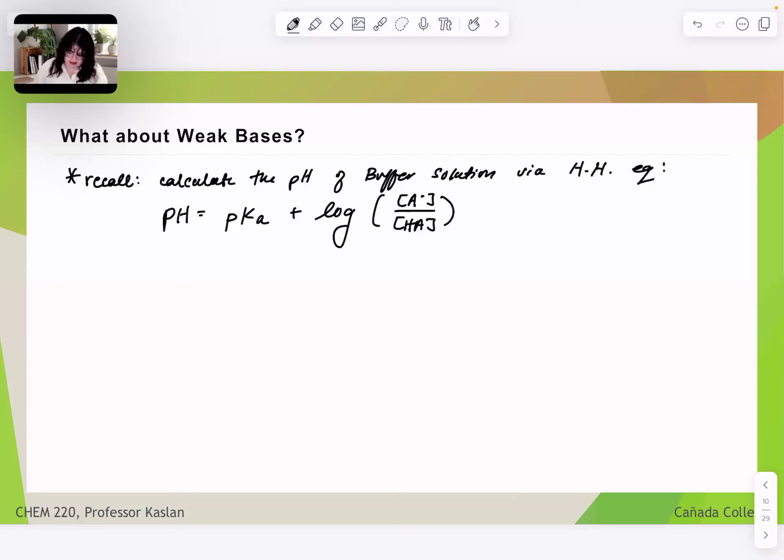So again, pH, this is the pH of the buffer solution. pKa, this is the negative log base 10 of the Ka of the weak acid. A minus concentration is the concentration of conjugate base anion that had to come from the weak acid. And HA is the concentration of weak acid.